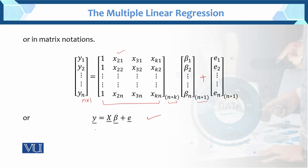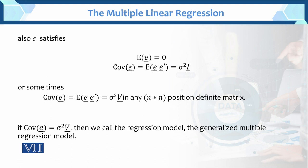When we have this model, it comes with certain assumptions. The error term e must satisfy: E(e) = 0 (the expected value of the error is zero), and Cov(e) = E(ee') = σ²I (the covariance of the error equals sigma squared times the identity matrix). The variance of e is E(e²) − [E(e)]², and since E(e) = 0, this simplifies to E(e²) = Var(e). The covariance in matrix form is written as ee' = σ²I.